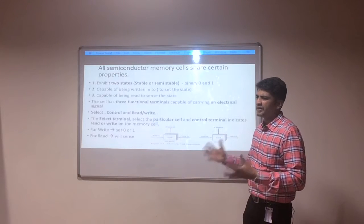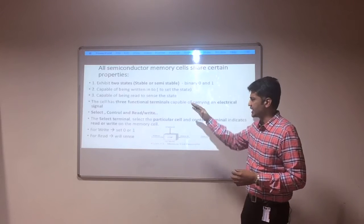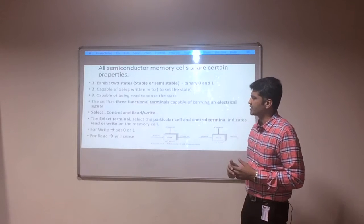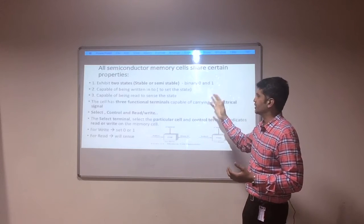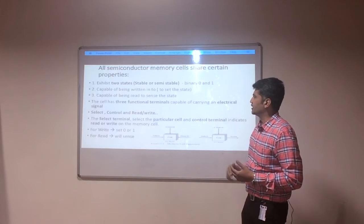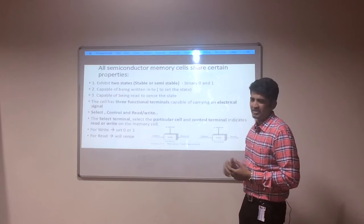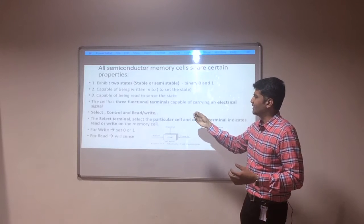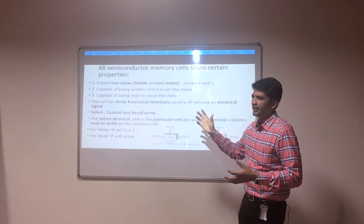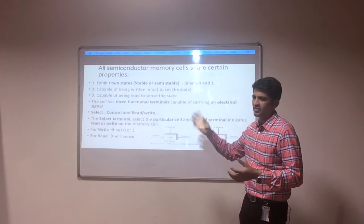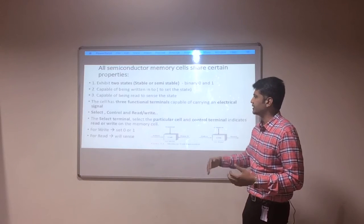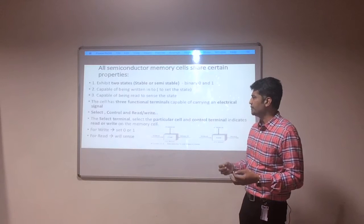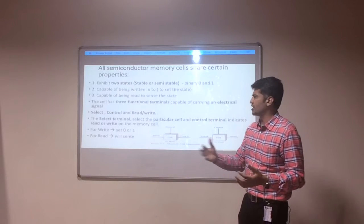All memory cells have certain properties. There are three properties. One is that it will represent a state — a binary state of 0 or 1. The state may be a stable state or a semi-stable state. The memory cell is capable of being written, which is used to set the state to 0 or 1. At the same time, it is capable of being read, so data stored in the memory cell can be sensed by the processor.